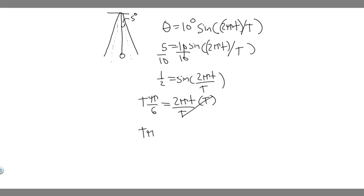And then you're going to want to go ahead and divide by 2 pi. So T pi over 6 equals 2 pi t. So if you go ahead and divide by 2 pi, you're going to get t equals, the pis will cancel, and then you multiply this by 2. So it's just T over 12.